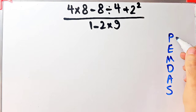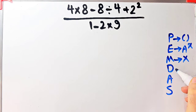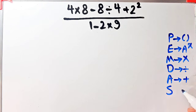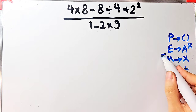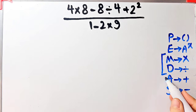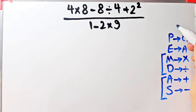In this rule: P stands for parentheses, E stands for exponent, M stands for multiplication, D stands for division, A stands for addition, and S stands for subtraction. Multiplication and division have the same level of priority, and addition and subtraction also have the same level of priority. When we have both in an expression, we start from the left and simplify.